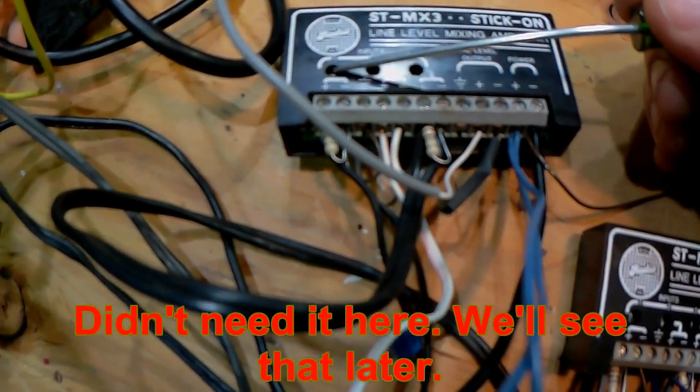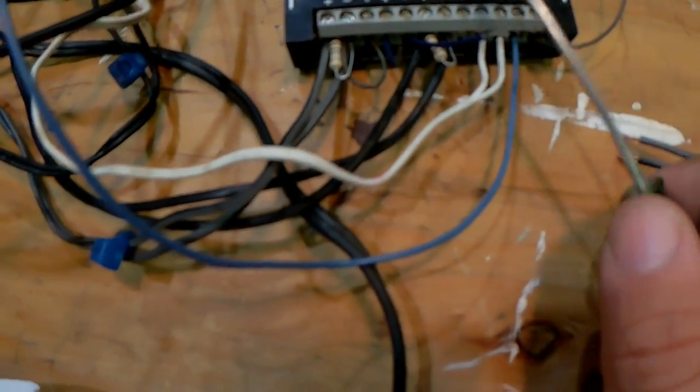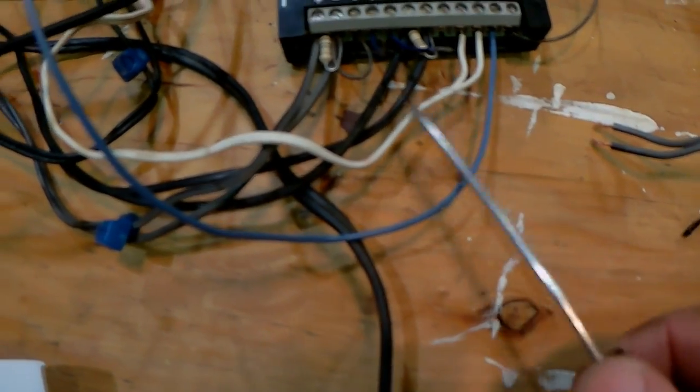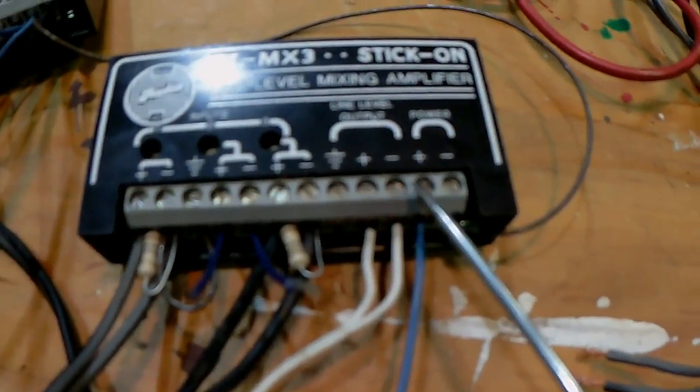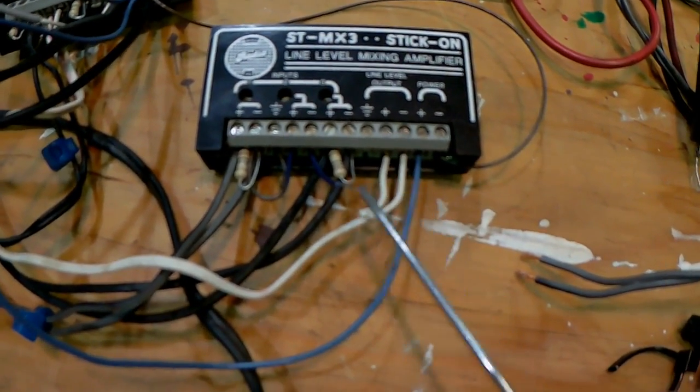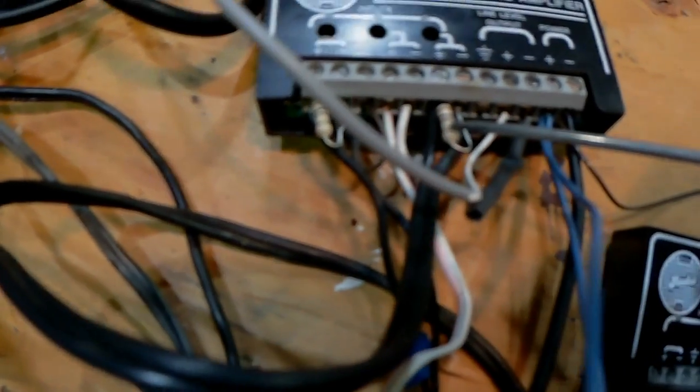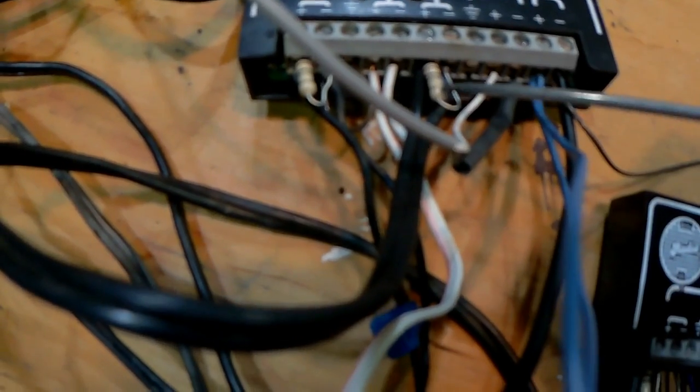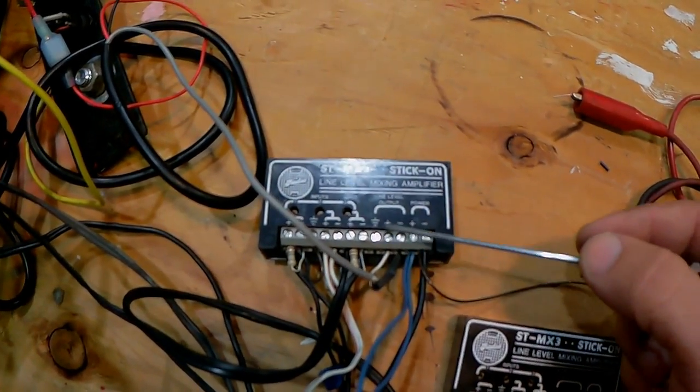Here is an unbalanced input into input number one. Number two is actually being fed by this guy because they're piggyback cascaded to each other. Here's radio one, radio two unbalanced, this one is balanced. Here's my power supply output feeding into the input on number two. Here's radio three, unbalanced input, and radio four, balanced input.